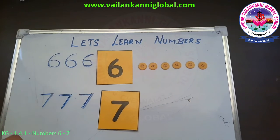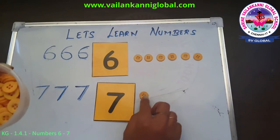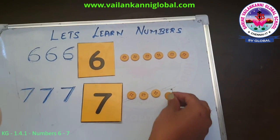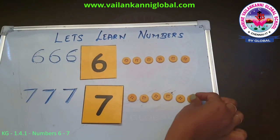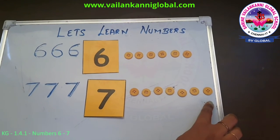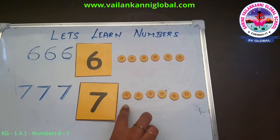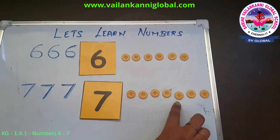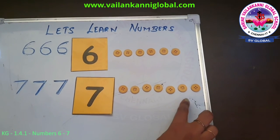Now let's count with buttons. One, two, three, four, five, six and seven. So how many buttons ma'am has kept here? There are seven buttons. Let's count one more time. One, two, three, four, five, six and seven. So there are seven buttons.